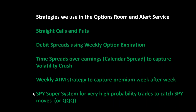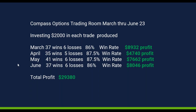I also do the SPY Super System for very high probability trades to catch SPY or Q moves. This is only going to be called out in the room - I can't do these by alert because they're too quick. These trades may only last two or three five-minute candles, maybe four or five minute candles in the SPY. So those are not going to be alerted, but if you're in the room you'll get these - they're very high probability trades.